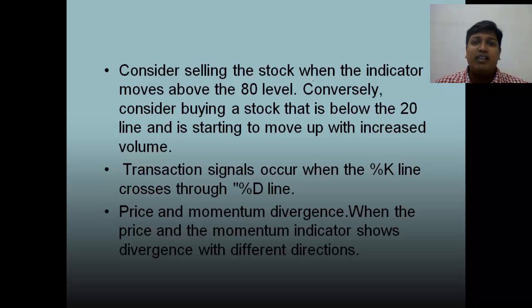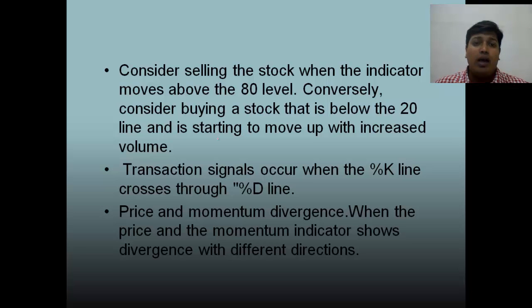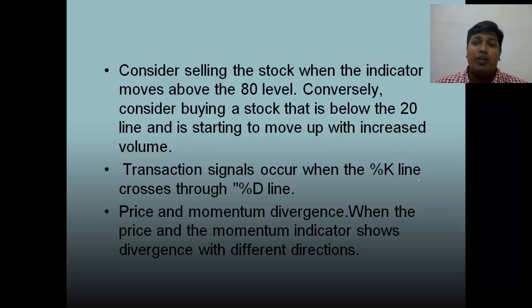Now let us look at how to use stochastics to trade. Consider selling the stock when the indicator moves above the 80 level. Conversely, consider buying the stock when it is below the 20 line and is starting to move up with increasing volume. Transaction signals also occur when the %K line crosses through the %D line.